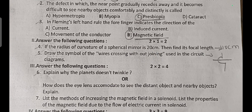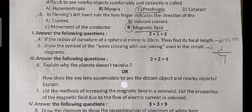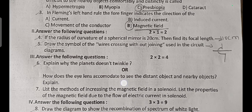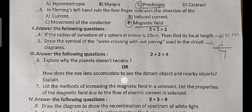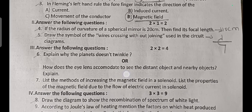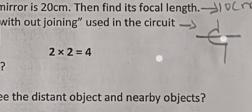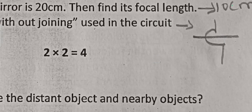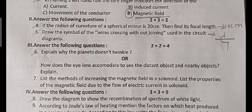Next, answer the following questions — two questions, each carries one mark. If the radius of curvature of a spherical mirror is 20 centimeters, then the focal length is 10 centimeters. Draw the symbol of wires crossing without joining used in a circuit diagram — this is the symbol.